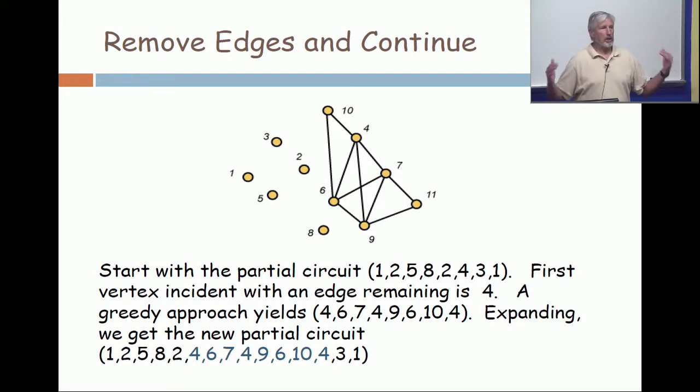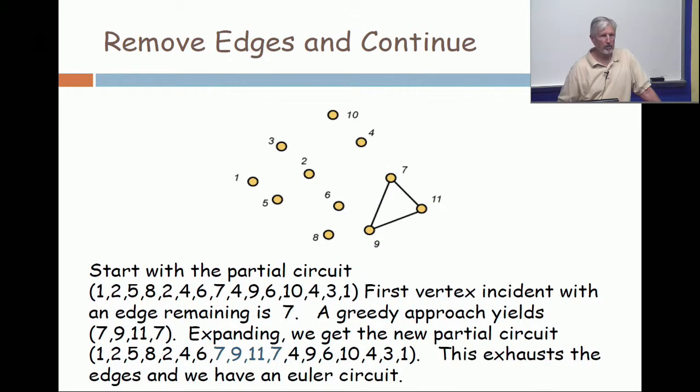So, you expand by taking vertex four and blowing it up. And now, the new partial sequence is the one at the bottom. Remove all those edges.